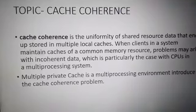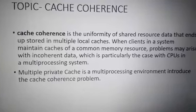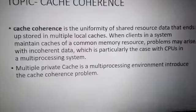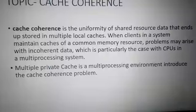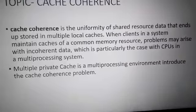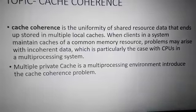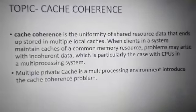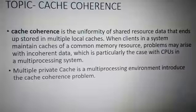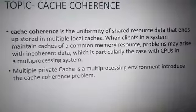Cache Coherence problem kya hai ki jab multiple caches aur processor mein hote hain, multiple processor jo hain common memory share kar rahe hain multiple caches ke beech mein. Toh us duration mein kya hota hai jab ek common memory share ho rahi hai multiple processors ke between, toh jo parameter hai jo main memory mein hai ya local cache mein hai, agar parameter same hai toh data consistent hai. Agar shared memory aur local cache memory mein data changes hai toh cache coherence problem ho sakti hai.